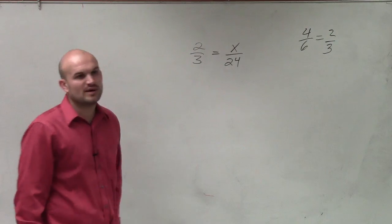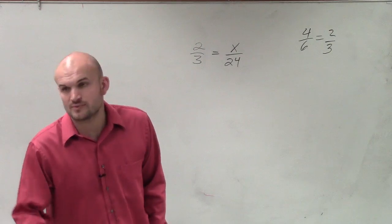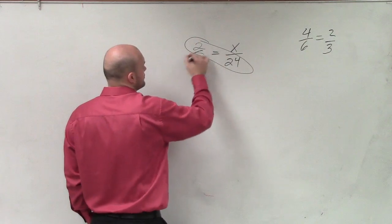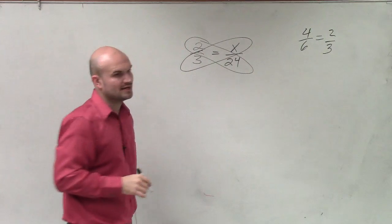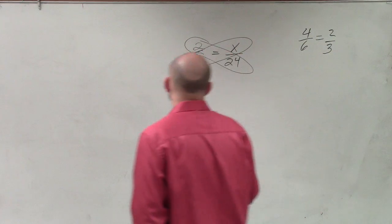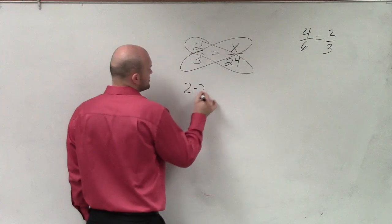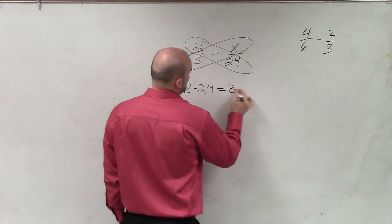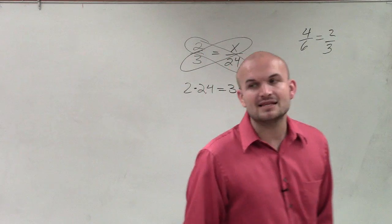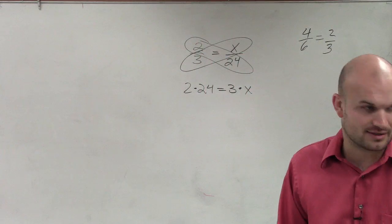Now, there's two different ways you guys can do this type of problem. The first way is exactly what we discussed, which was cross multiplication. So you circle the cross products, which would be the products of your extremes and your means. Then I rewrite this as 2 times 24 equals 3 times x. Now, until you guys get pretty good at this, I would highly recommend that you rewrite this product.